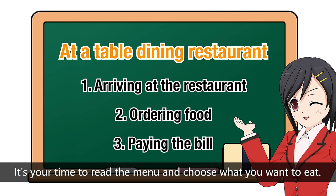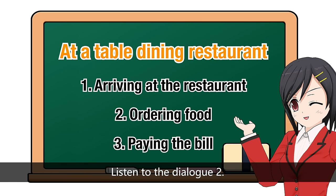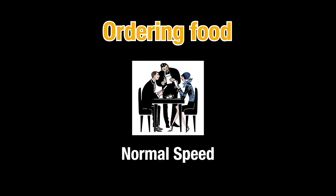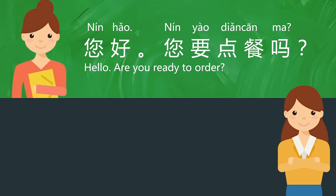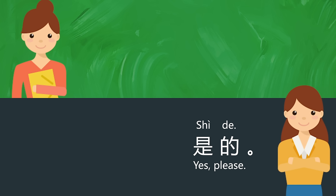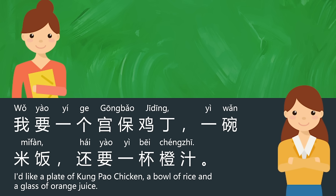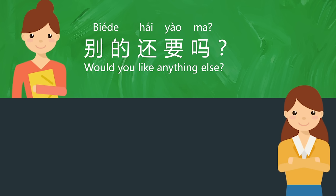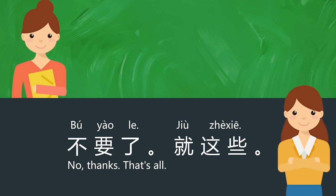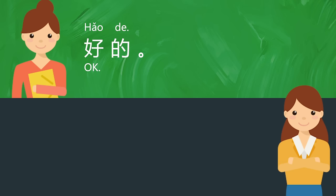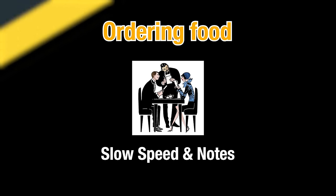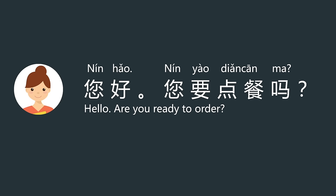Now you are seated; it's time to read the menu and choose what you want to eat. Listen to dialogue two. 您好，您要点餐吗？是的。您要点什么呢？我要一个宫保鸡丁，一碗米饭，还要一杯橙汁。别的还要吗？不要了，就这些。好的.